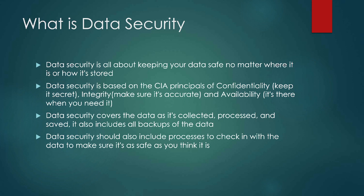Confidentiality means being able to keep the data secret. Integrity is making sure that it's accurate and it hasn't been changed. Availability means it's there when you need it — when you want to go access your database, your database is there. Data security covers the data as it's collected, processed, and saved, including backups of data. It should also include processes to check and make sure that the things you are doing are actually doing what you think they are.